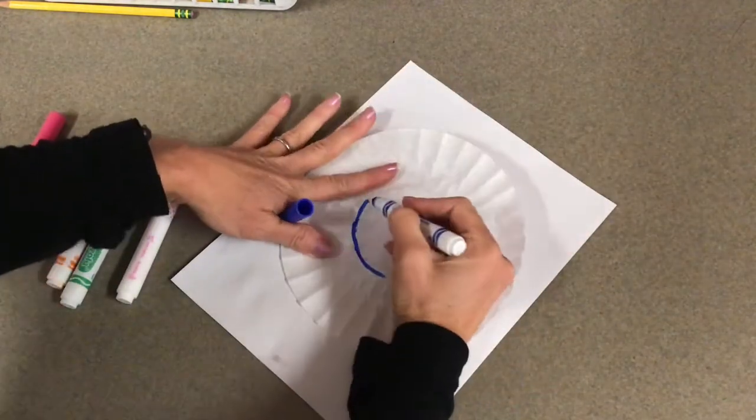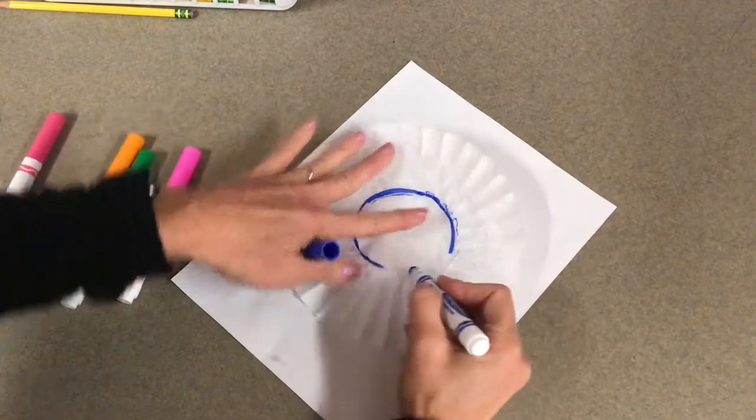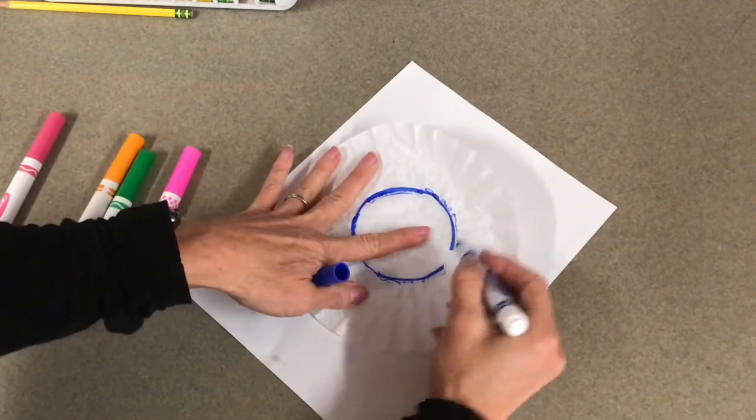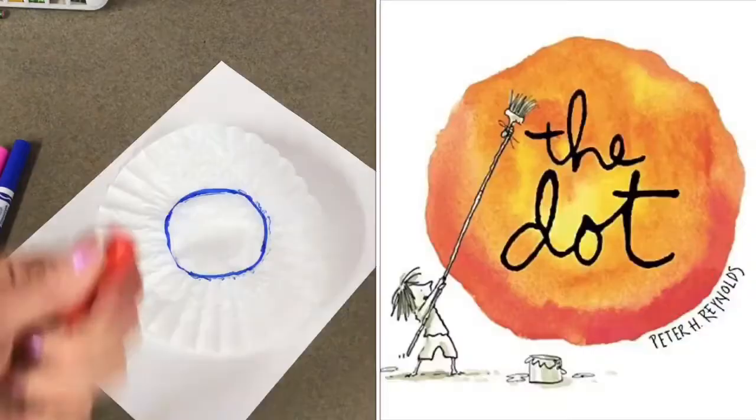You have a scrap paper. Don't put anything inside the circle but leave it blank. This week it is National Dot Day. We're going to be listening to The Dot. It's by Peter Reynolds, who is our artist of the month.